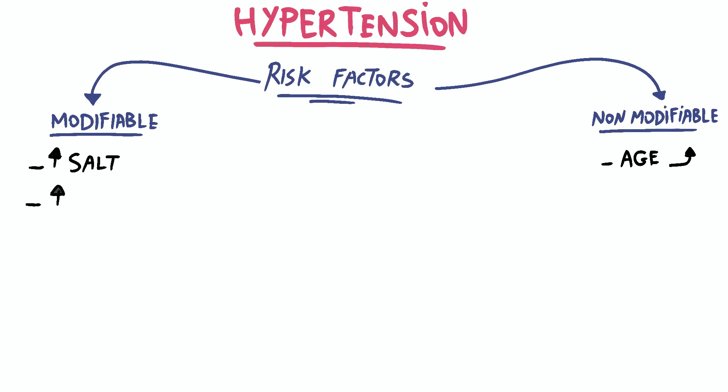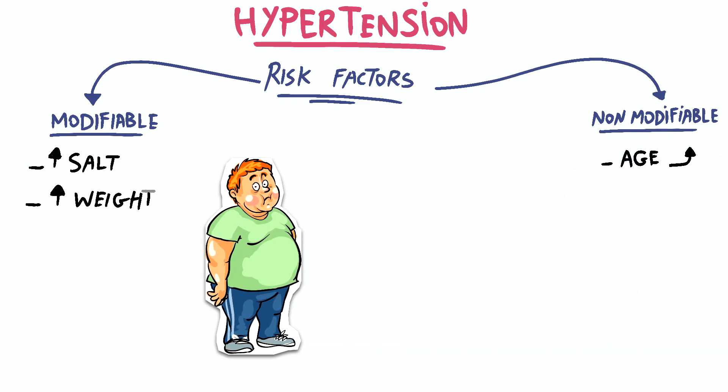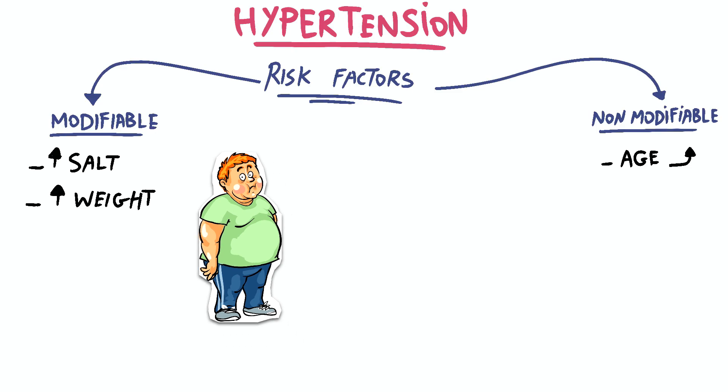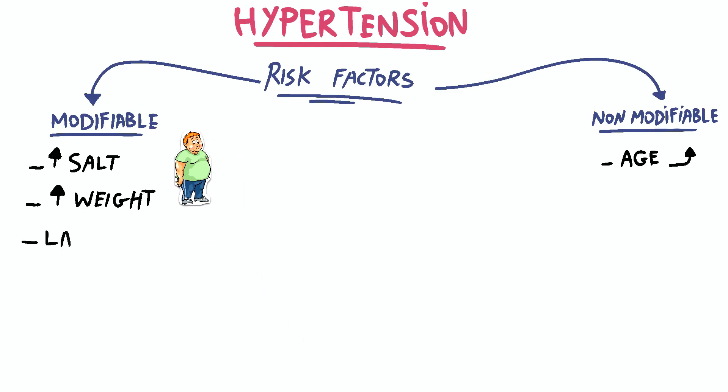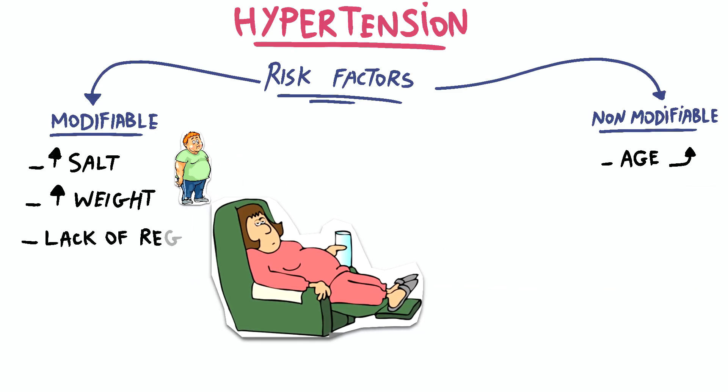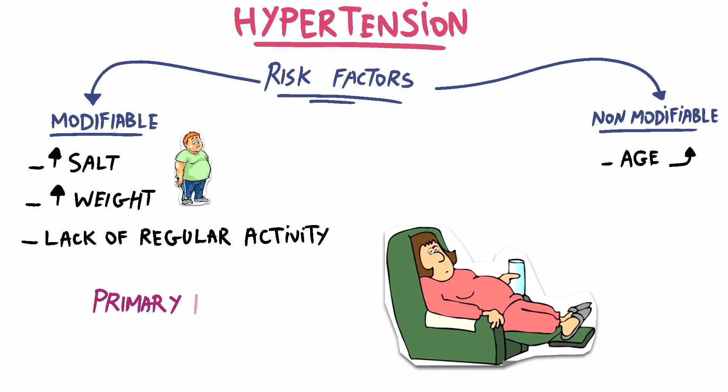Modifiable risk factors include consuming excessive amounts of salt and excess weight, which puts an extra strain on the heart, leading to increased blood pressure. A lack of regular exercise or physical activity is also a contributing modifiable factor.